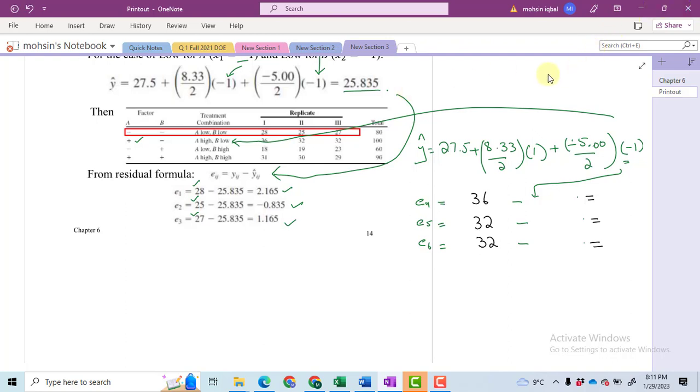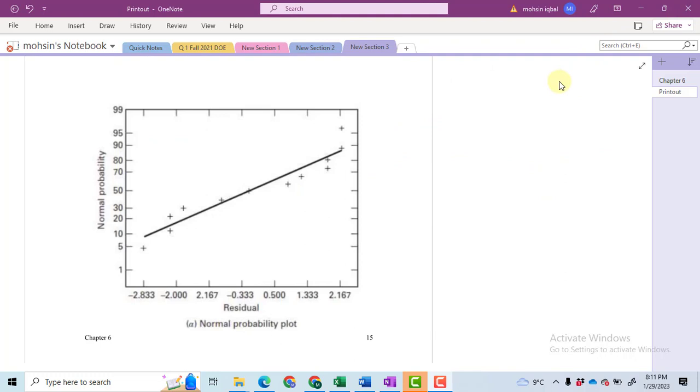So in total you will get 12 residuals. Often we calculate these residuals using software just like Minitab, and then we plot these residuals. You can see here a normal probability plot for the residuals, and you can see only one of the values is deviating from the central line.